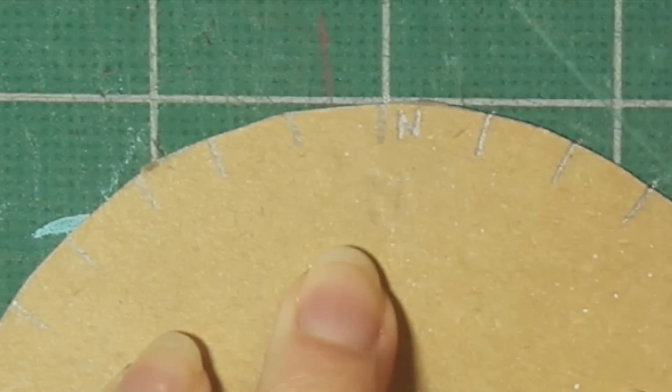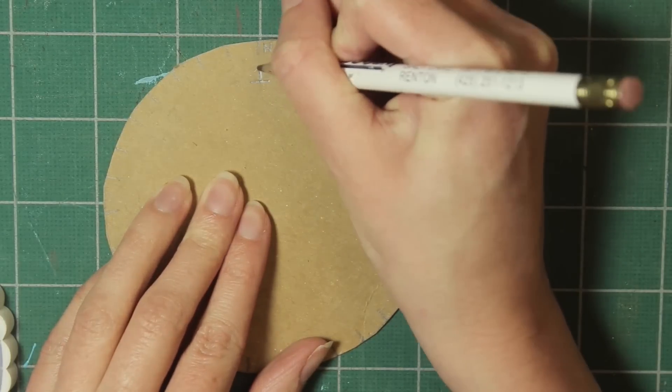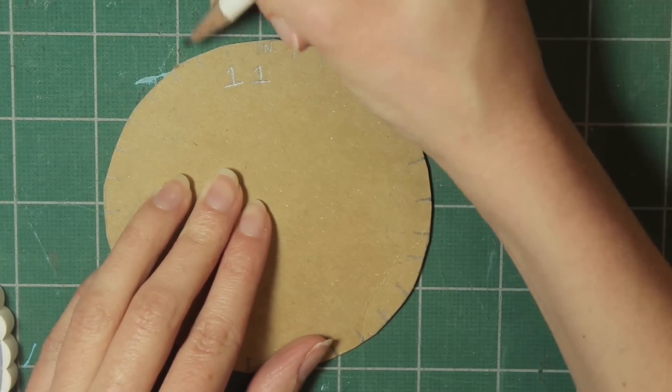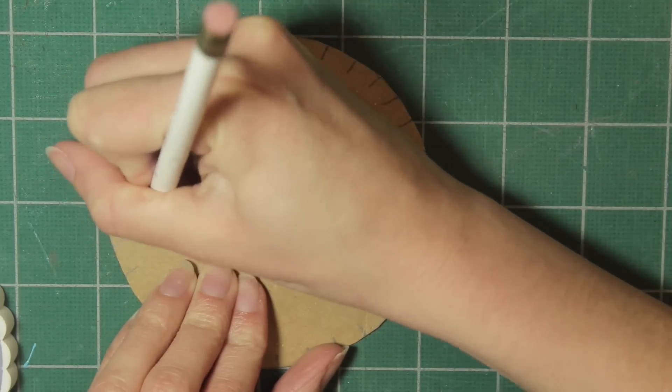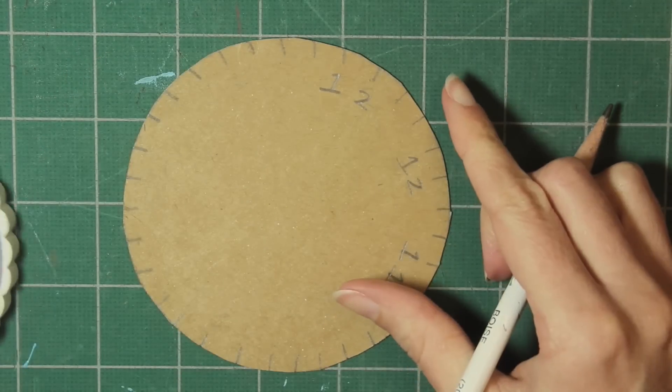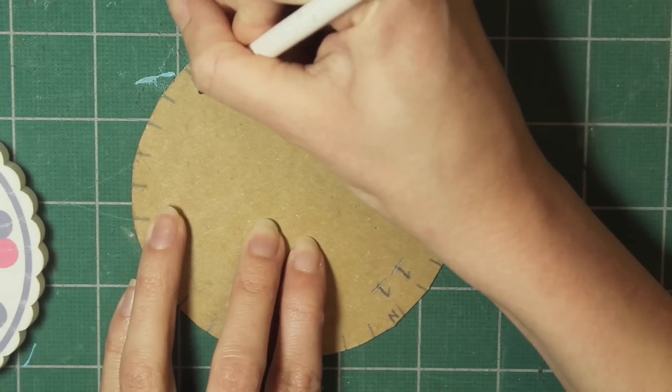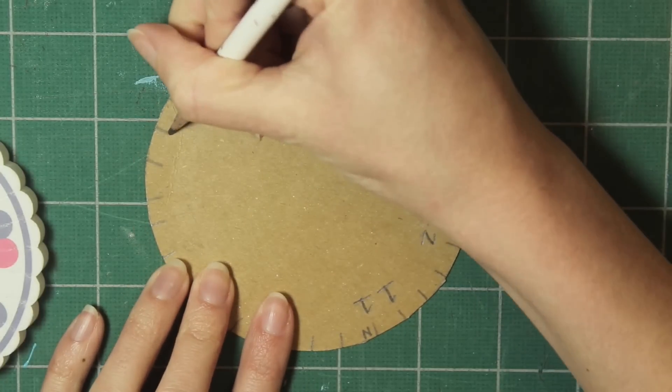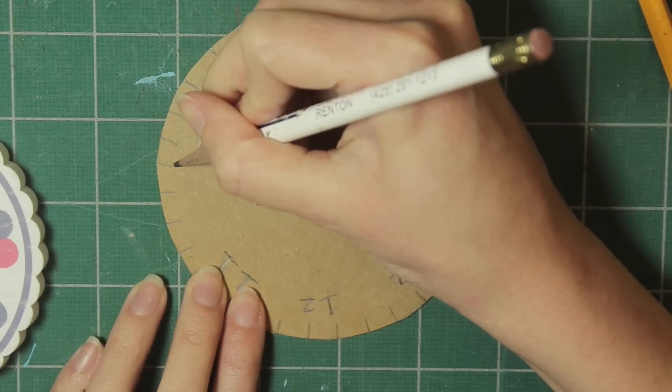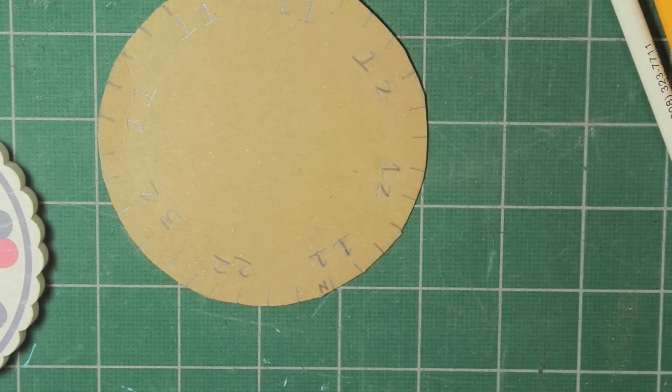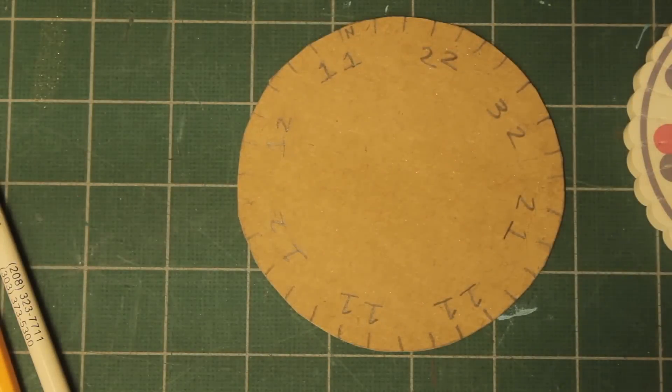Then once you're done with that, mark an N at the top to mark north. This will be at the top when you start the bracelet. Next write a one directly under that and a one on the notch next to it. Then count over three and write a two, and then write a one next to it. Count over three, write a two and then a one next to it. Count over three, write a one and a one. Count over three, write a one and a two. So it should look like this, and I turned the light off because I thought maybe you could see it better like this.